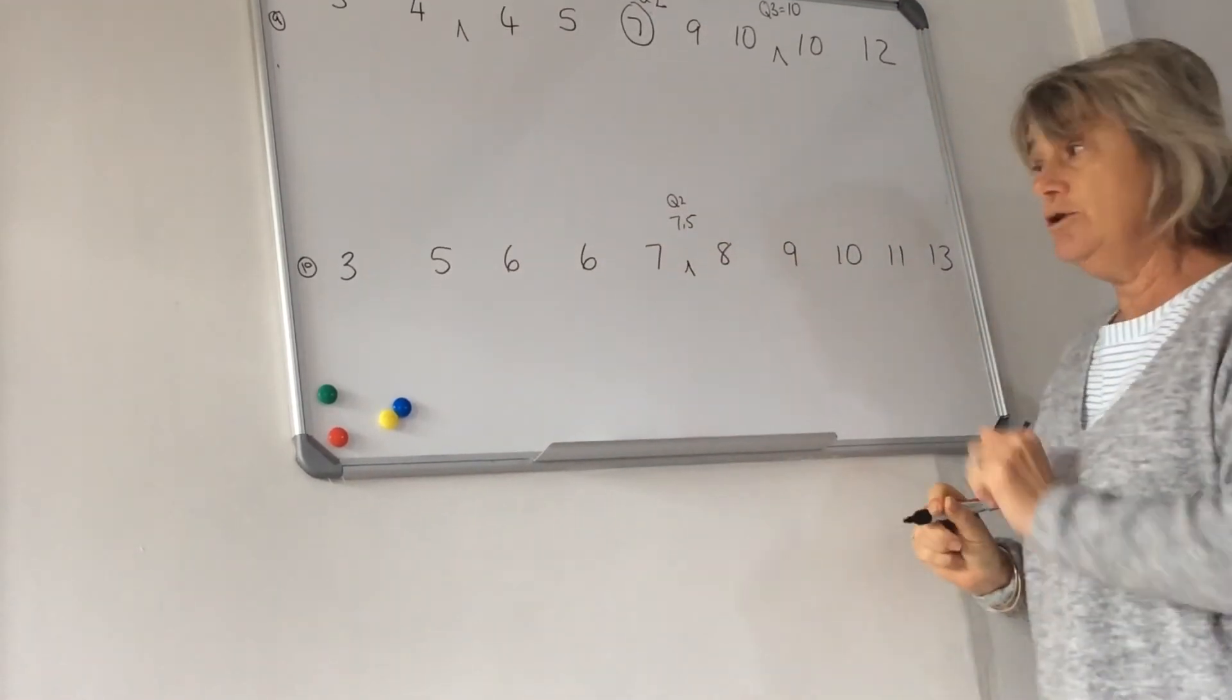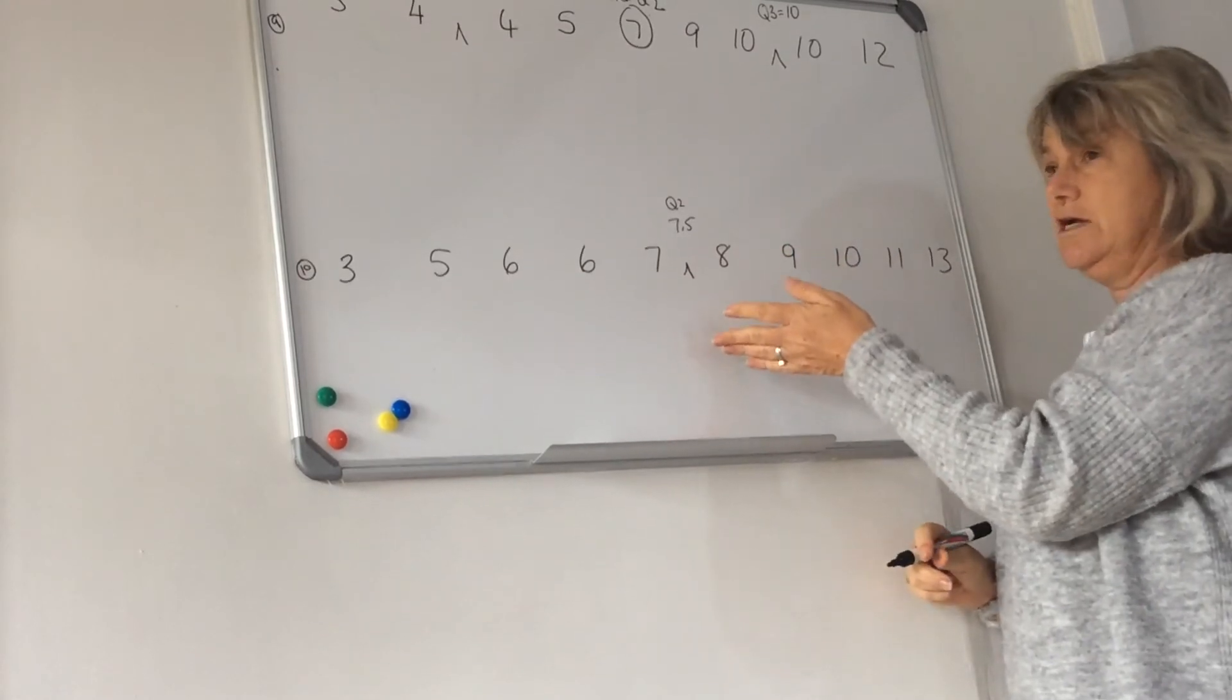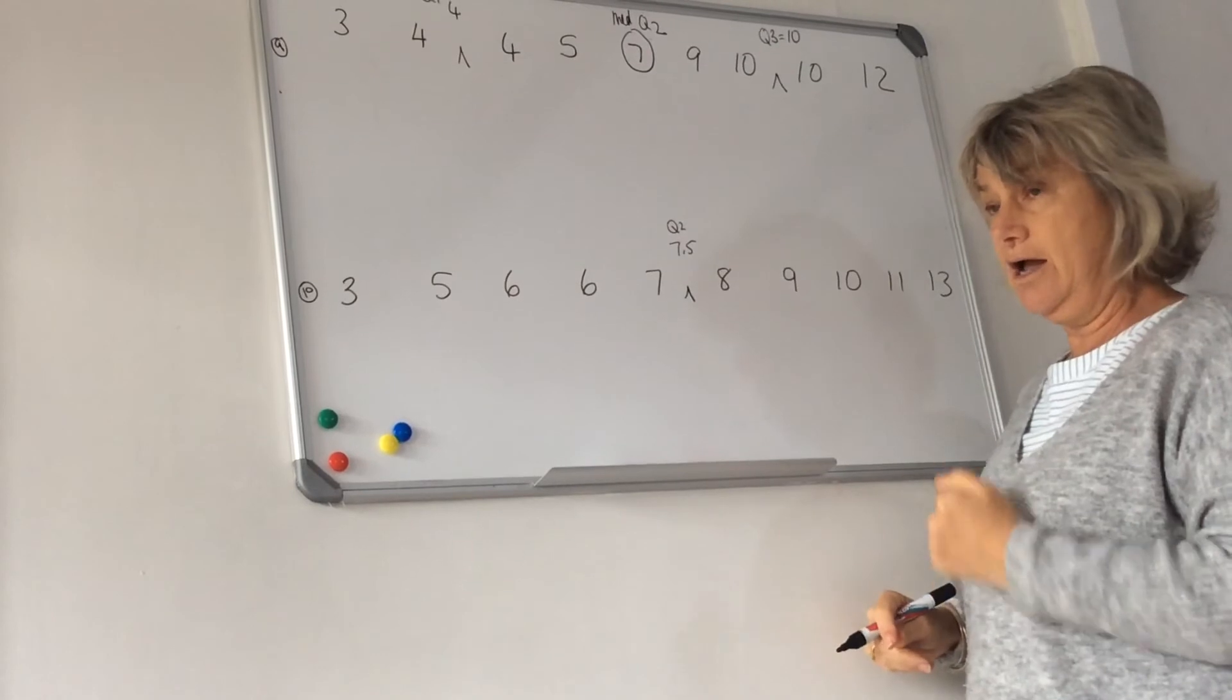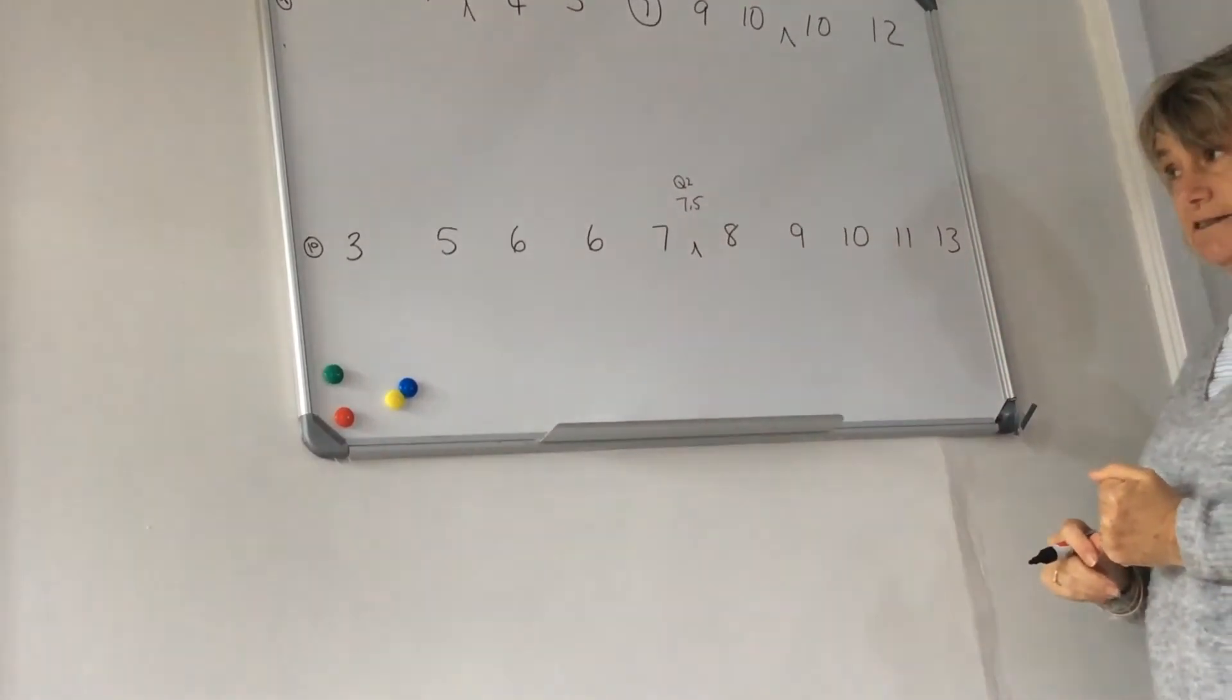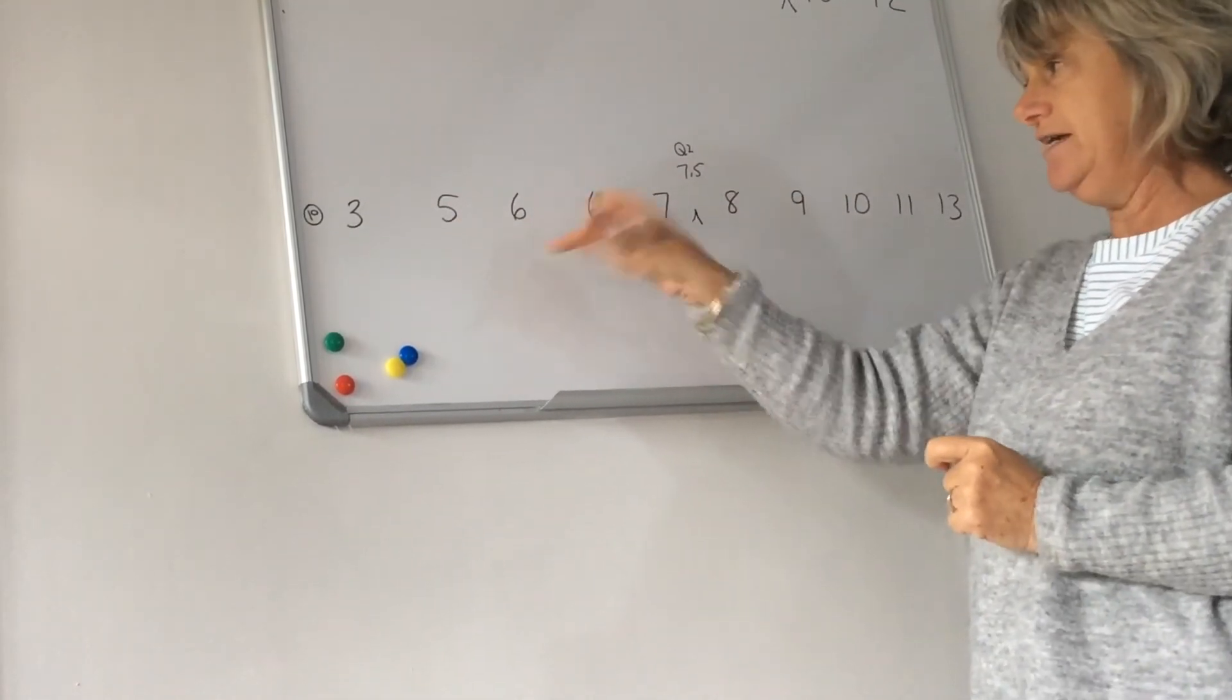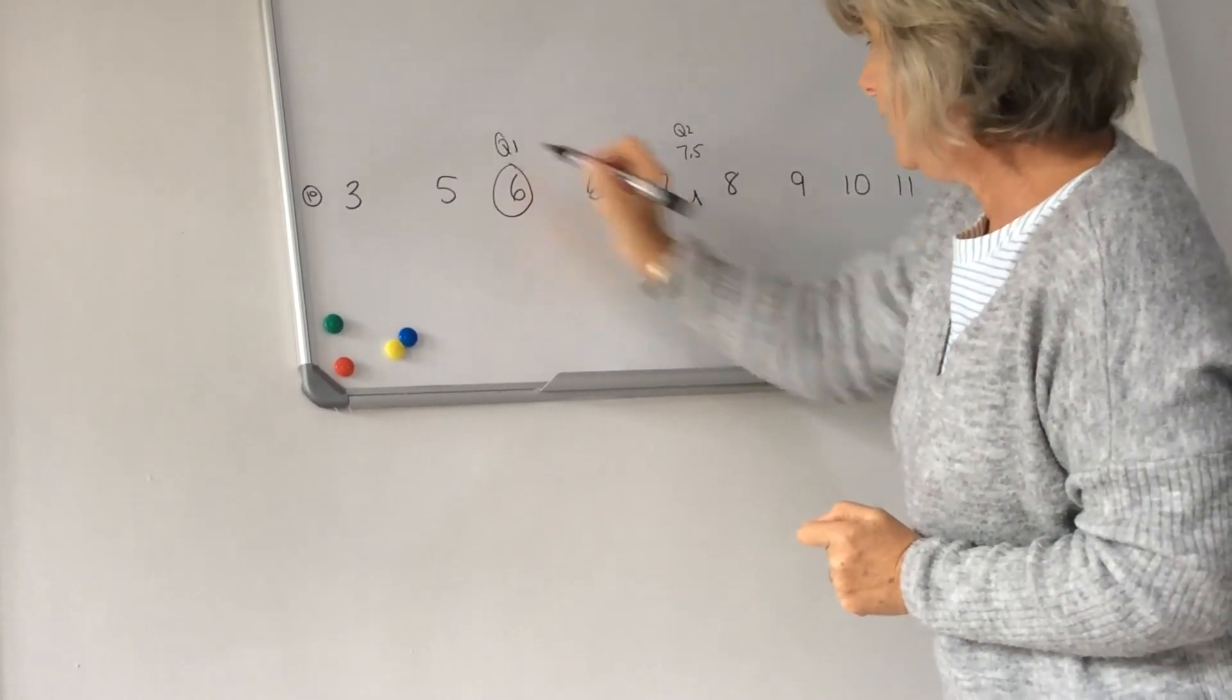Although seven and eight were used to find the quartile two, they are not actually quartile two. And so the seven is still part of the data set, the lower data set, and eight is still part of the higher data set. So if we look at the lower data set, we have five values and there is a middle value. It is that six. So there is quartile one.